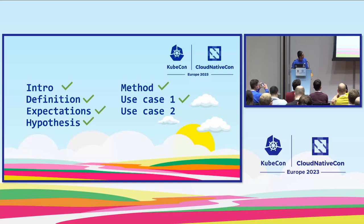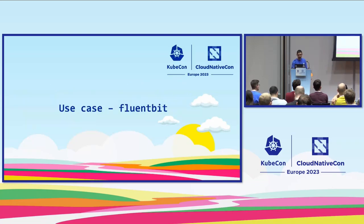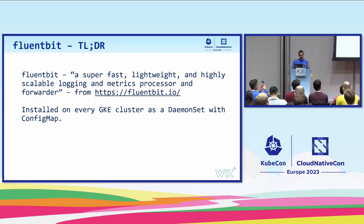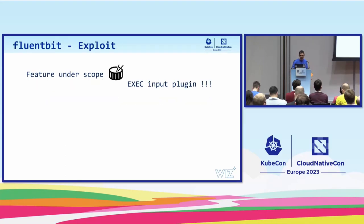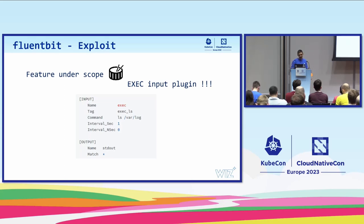Use case two: Fluentbit. I bet everybody knows this — a very popular log management platform, installed on every GKE cluster, and can be installed according to EKS best practices from upstream. Latest version is 1.8.12. But what's interesting is the feature we're going to exploit: the exec input plugin. With such a juicy name, we couldn't let it stay.